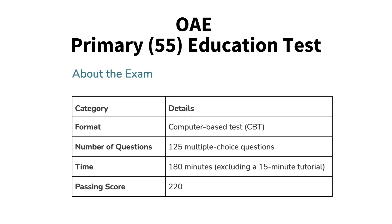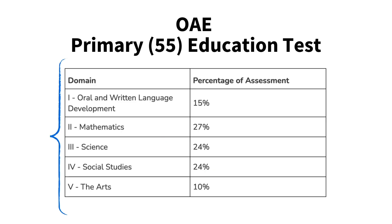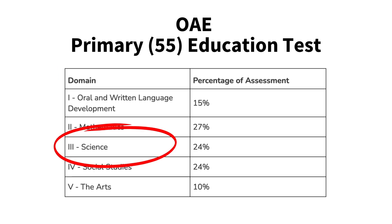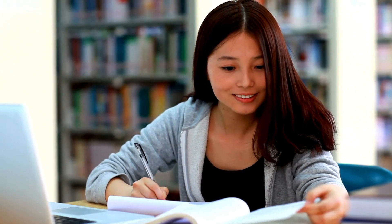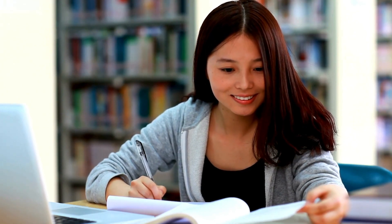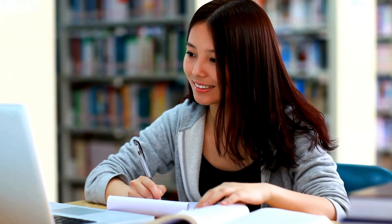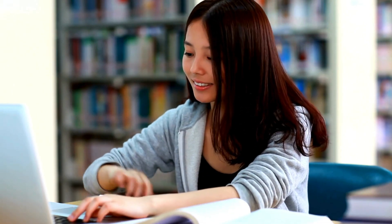The Primary Education Exam Number 55 is a required test for people who want to become a licensed teacher in Ohio, where you will receive 125 multiple choice questions and be tested over five different subject domains. The questions in this video are all about Domain 3: Science, to help you get totally prepared.